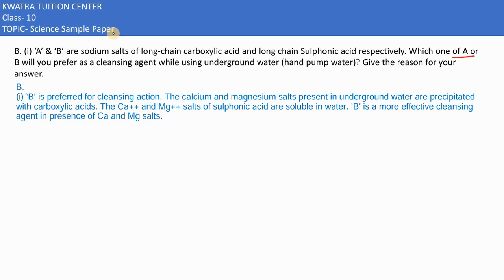Here in this case, problem 34B says A and B are sodium salts of long chain carboxylic acid and long chain sulfonic acid respectively. Which one of A or B will you prefer as a cleansing agent while using underground water?